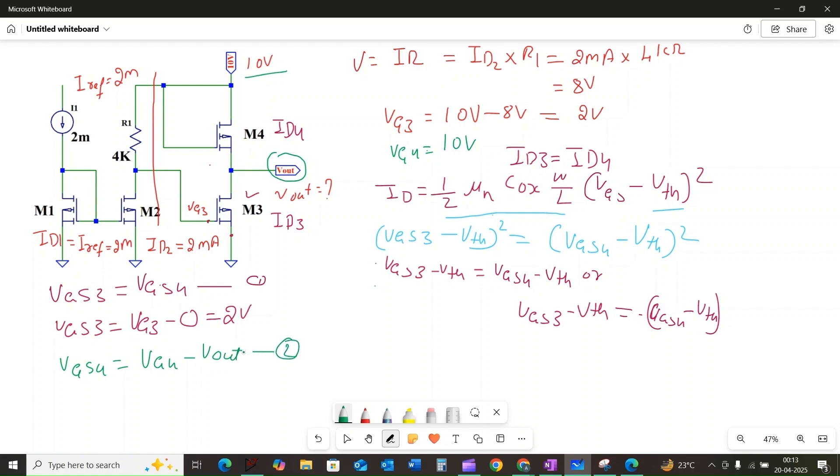We know that VGS3 is equal to VGS4. If we plug the value of VGS3 into equation 2, we will get 2 volts equal to VG4, which is 10 volts, minus Vout. Finally, we solve for Vout: Vout is equal to 10 volts minus 2 volts, and we get the output voltage of the MOSFET in this circuit is 8 volts.